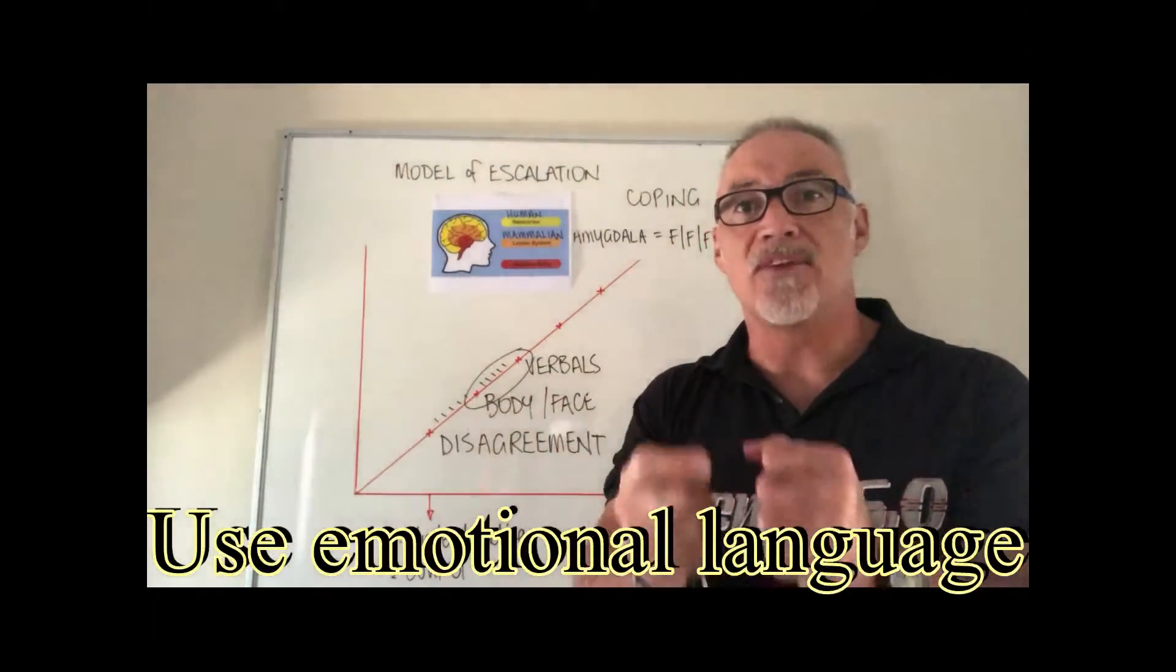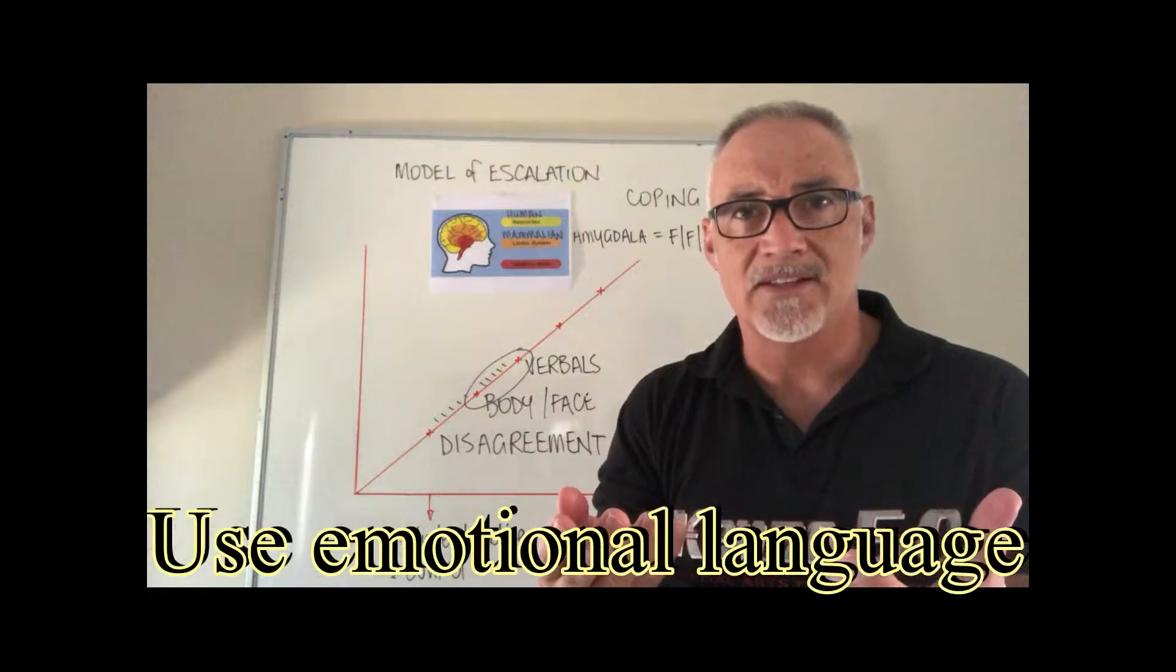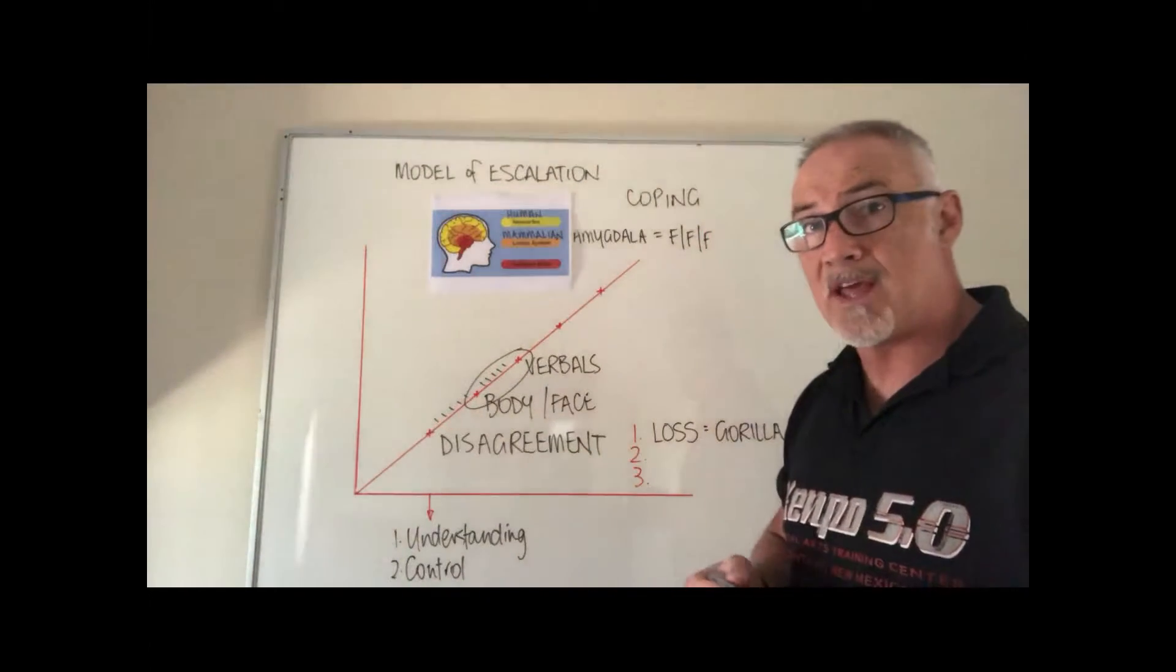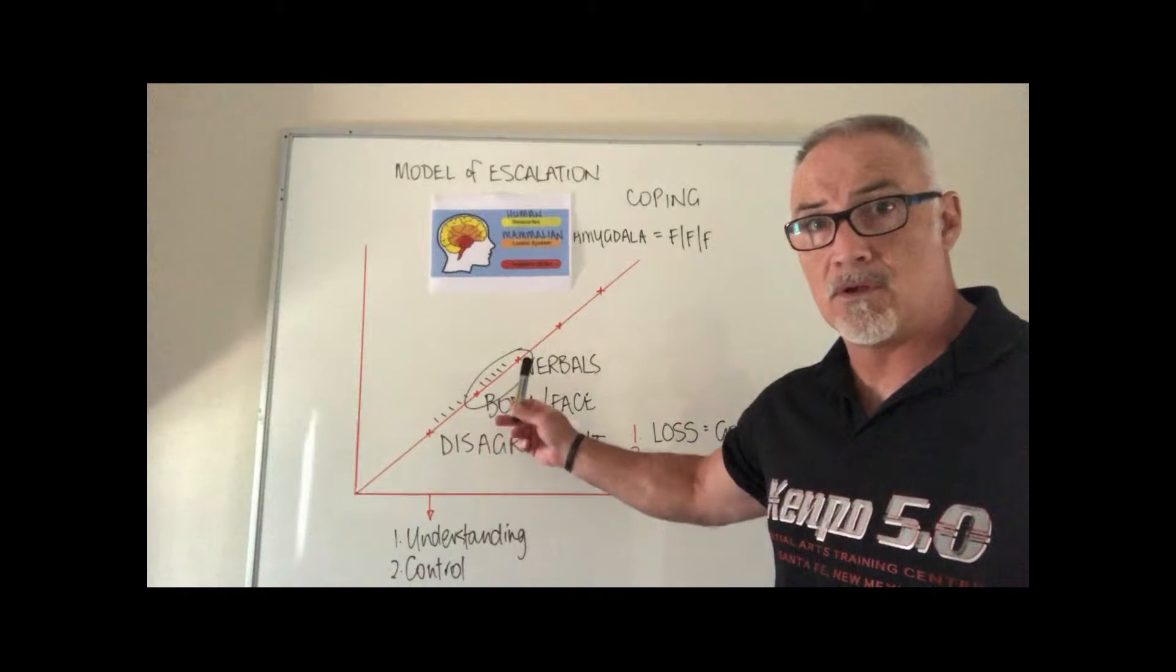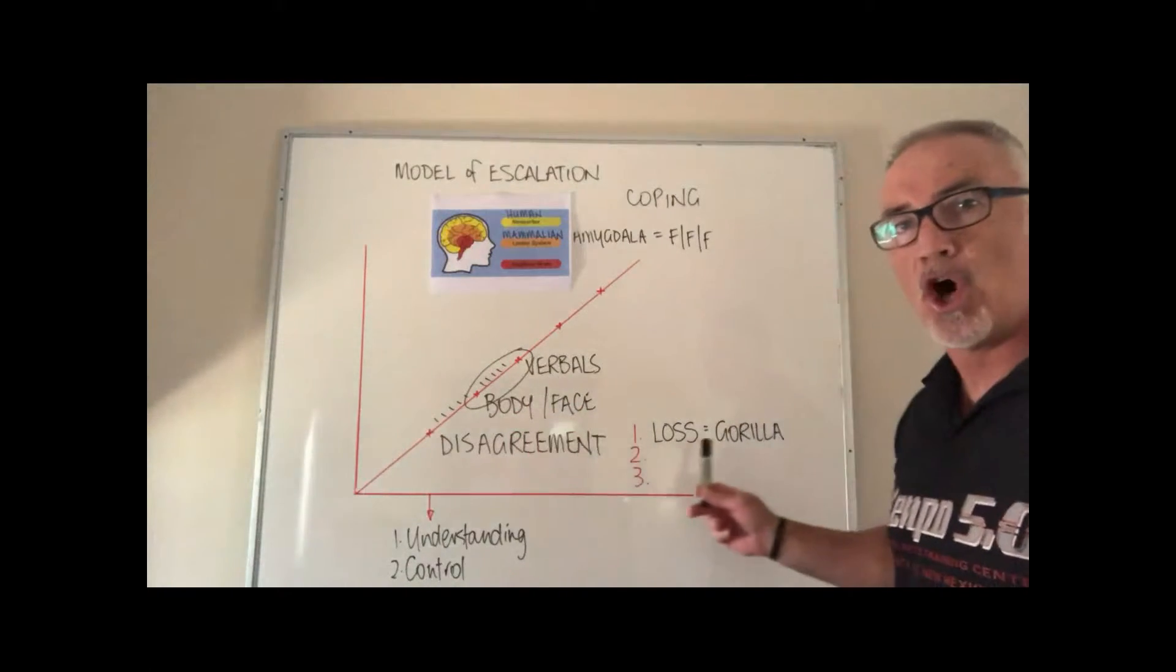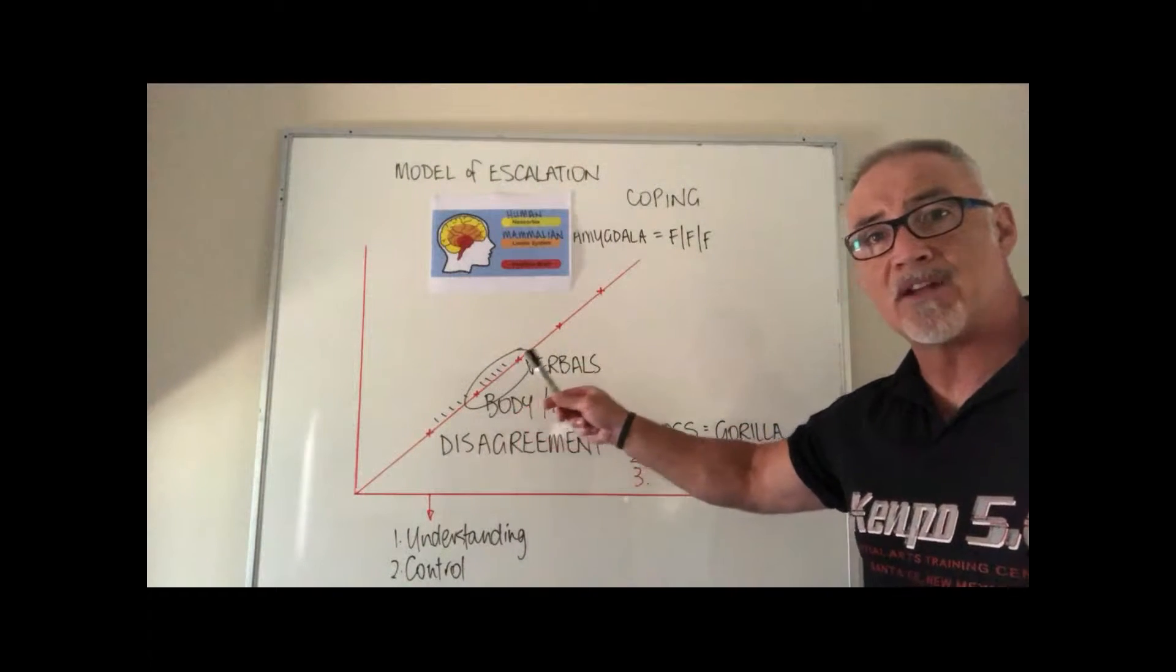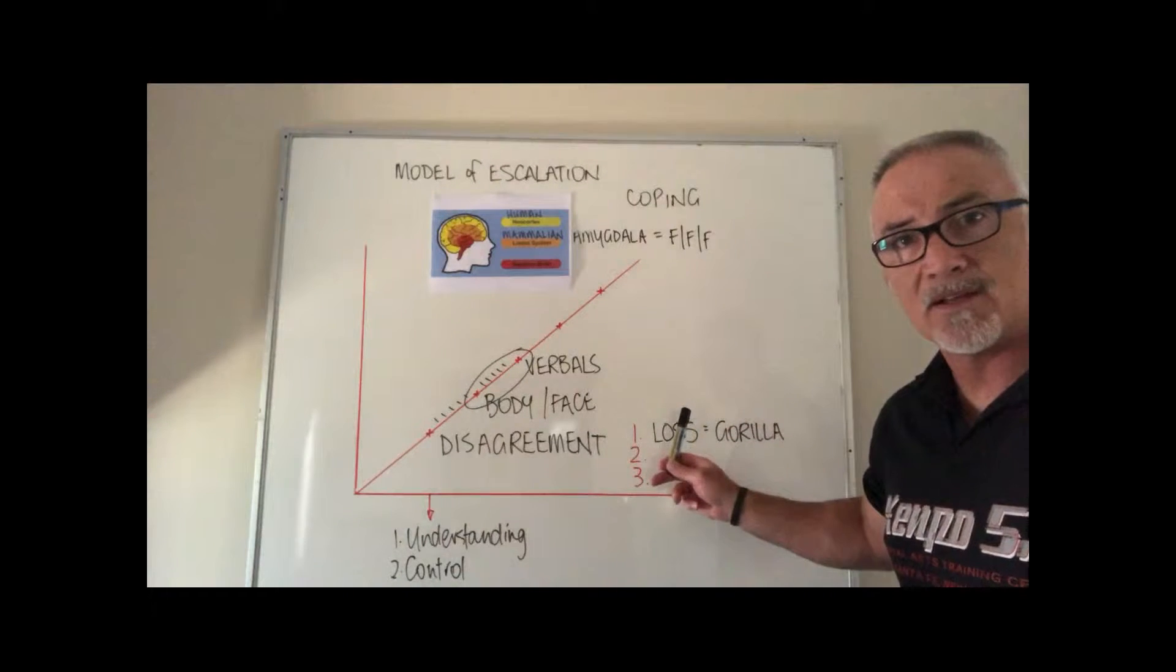Don't give it logic. It's not the language it understands. Speak to it in emotional terms, use emotive language. We've looked at signs and symptoms of this gorilla aggression. We've determined that it's loss. There's your diagnosis. We've looked at some signs and symptoms of escalating behavior and based on that we've made a diagnosis that this is a loss related aggression.